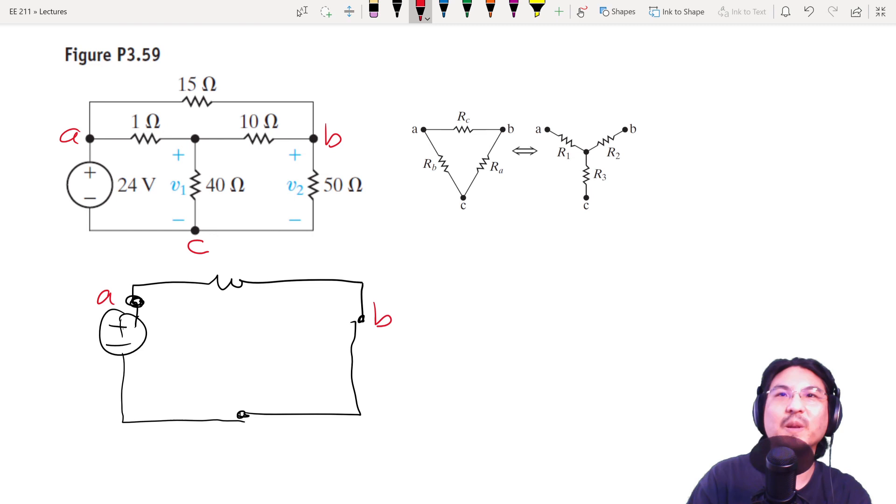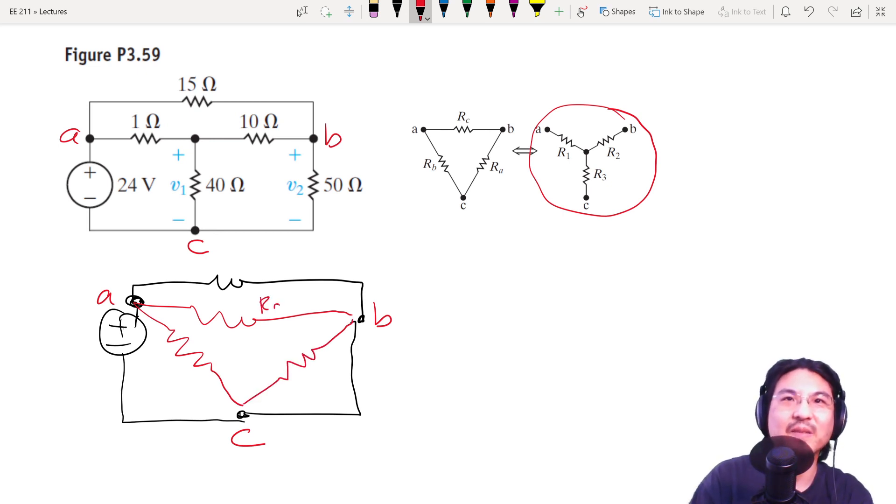...A, B, C, and that's this one. So I'll replace this Y with a delta. So then it'll look like this, where this is RC, RA, RB.